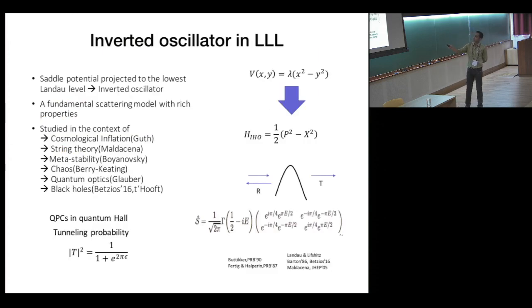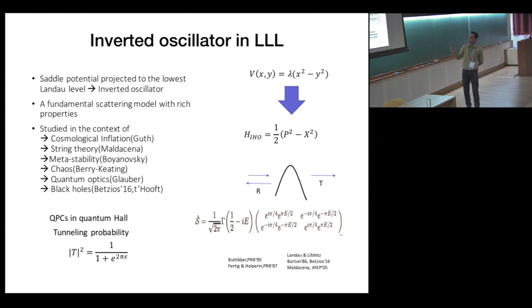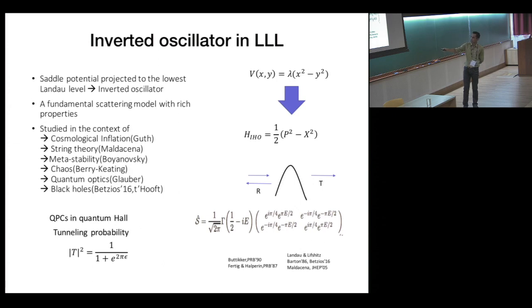This inverted harmonic oscillator obtained in the lowest Landau level is a very fundamental scattering model. It has been studied in cosmological inflation by Alan Guth, in string theory, in metastability and chaos under the name of the Barreira-Keating Hamiltonian, and more. The scattering matrix can be exactly calculated. The tunneling probability takes a specific thermal form, and in fact this particular scattering matrix was already derived in the Landau-Lifshitz quantum mechanics textbook.